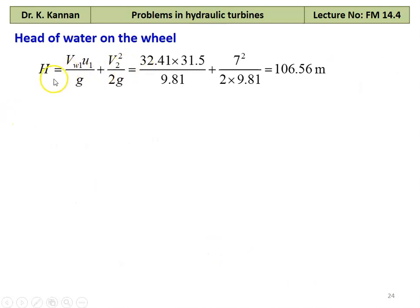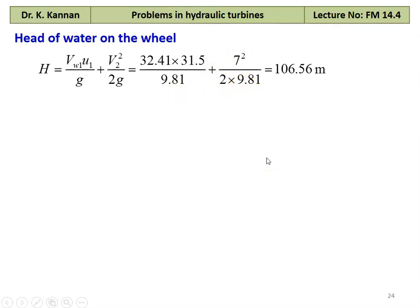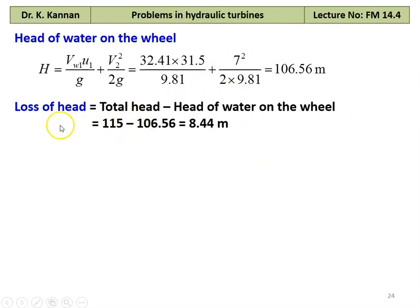The head of water on the wheel: H equal to (Vw1 into U1) divided by g, plus V2 squared divided by 2g. This is the energy transfer head: 32.41 into 31.5 divided by 9.81 plus 7 squared divided by 2 into 9.81 equal to 106.56 meter. The loss of head: total head available is 115 meter, head of water on the wheel is 106.56 meter, therefore loss of head equal to 8.44 meter.